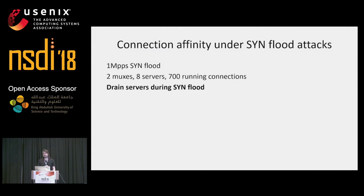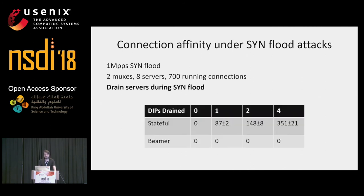Next we tested connection affinity under SYN flood attacks. We had 700 running connections being serviced by eight servers, with a SYN flood attack of one million packets per second running in the background. As expected, SYN floods flush out any stateful load balancer's state — the stateful load balancer lost connections, roughly proportional to the number of servers being drained. In comparison, Beamer dropped no connections. Daisy chaining ensured perfect connection affinity.